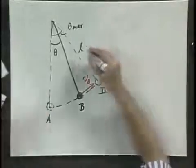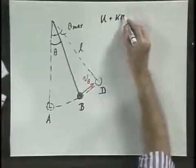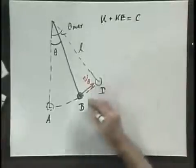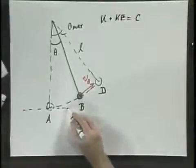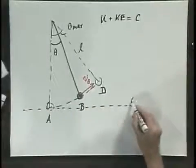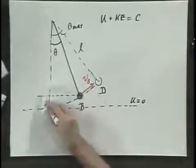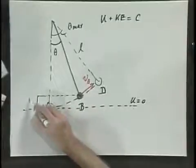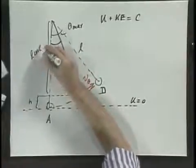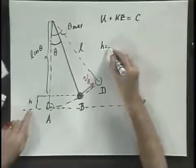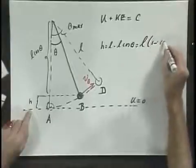If there is no friction of any kind, then the sum of potential energy and kinetic energy must be conserved — here, here, and here — and must be the same constant. I can always arbitrarily choose the level of gravitational potential energy, and I call it U equals zero at A. So at point B, I need to evaluate this distance H. This equals L cosine theta, so H equals L minus L cosine theta, which equals L times (1 minus cosine theta).